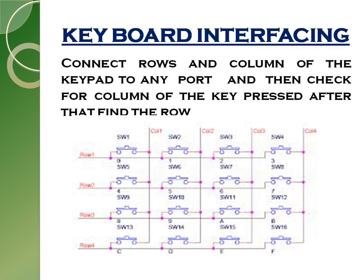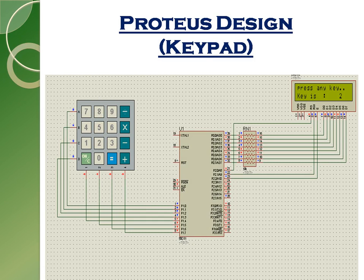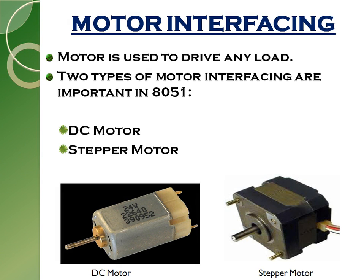Next is keyboard interfacing, which is an input device. It has four rows and four columns. If you want to make a keyboard of 16 keys, you need four rows and four columns. If you want fewer keys, you can implement it with three rows and three columns. In the Proteus diagram, I am interfacing a 4x4 keypad and displaying the result on the LCD. Here I have pressed key 2 and it is showing on the LCD.